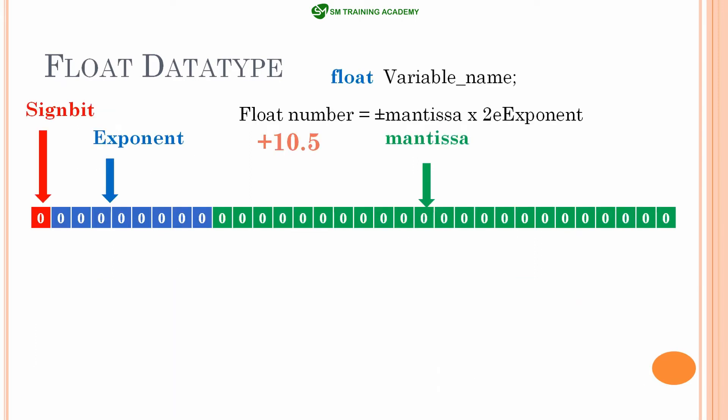Floating point numbers are not directly stored into memory after converting to binary format. Instead, we take the hexadecimal representation and do the reverse process to understand how the number is stored. For example, the hexadecimal representation of 10.5 is 0x41A80000. Let me represent this number in binary format.